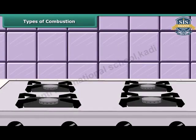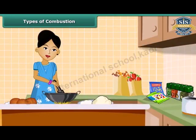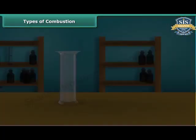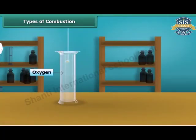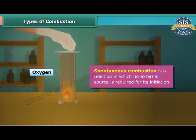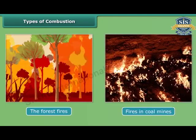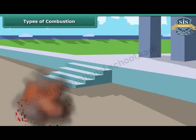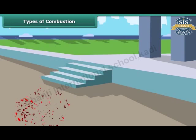Let us now look at types of combustion. A lady igniting LPG in a kitchen — LPG burns quickly producing a lot of heat. This type of combustion is called rapid combustion. When white phosphorus is left in the open for some time, it catches fire. This type of combustion is called spontaneous combustion. Other examples of spontaneous combustion are forest fires and fires in coal mines. The burning of a cracker produces a large amount of heat, light, and sound. This type of combustion is called explosion.